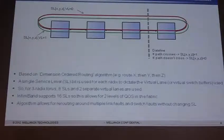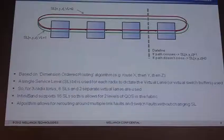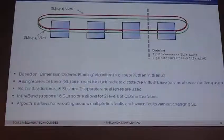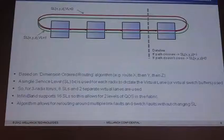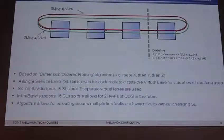The algorithm is based on dimension order routing, meaning you always go in the X direction first, then Y, then Z. It uses a service level bit for each radix to dictate the virtual lane being used — service level bit zero for X, bit one for Y, bit two for Z. I build up my service level by saying: if I cross the dateline in X, set that bit to one; if I don't cross in Y and Z, set those to zero. This determines what service level I use as I go through my fabric.